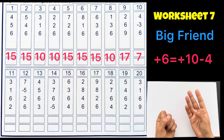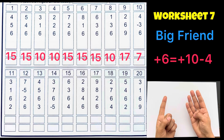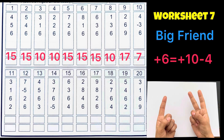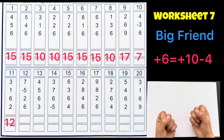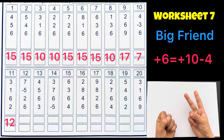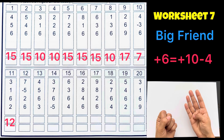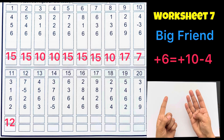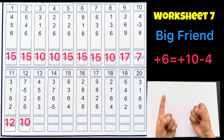3 plus 1 plus 6 plus 10 minus 4 plus 2, answer is 12. 7 minus 5 plus 2 plus 6 plus 10 minus 4, answer is 10.